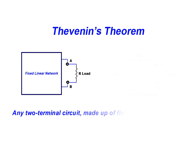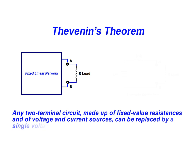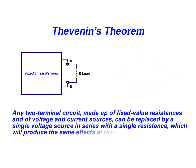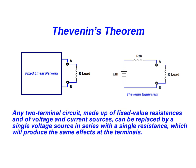The purpose of this demonstration is to illustrate the steps required when creating the Thevenin-equivalent circuit. Thevenin's theorem states that any two-terminal circuit, made up of fixed-value resistances and of voltage and current sources, can be replaced by a single voltage source in series with a single resistance, which will produce the same effects at the terminals.